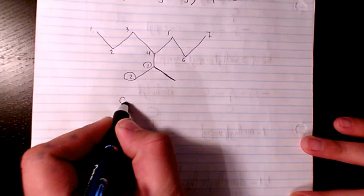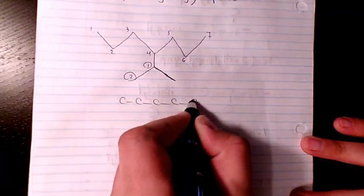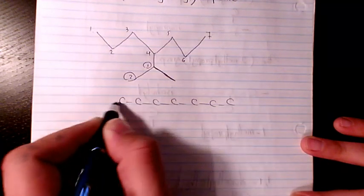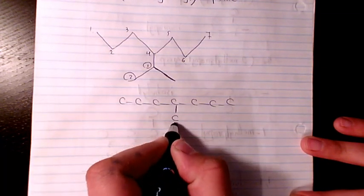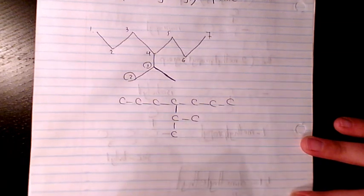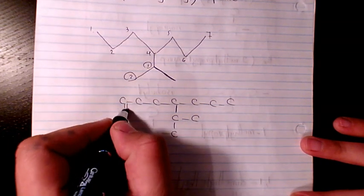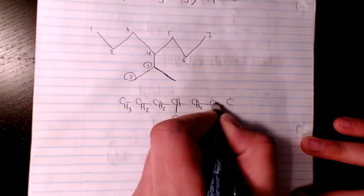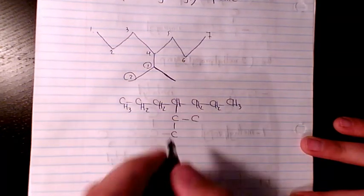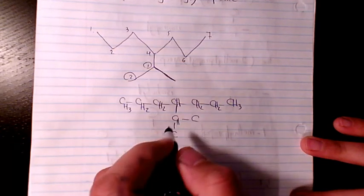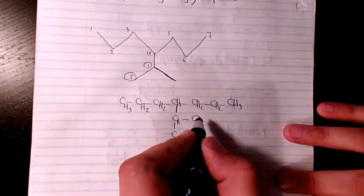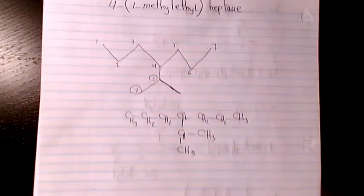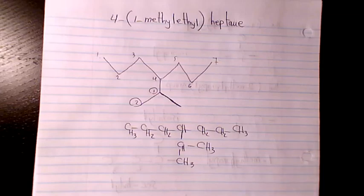Or if you want to draw it in the other format: one, two, three, four, five, six, seven. At the fourth position we have something like this. If you want to put the hydrogen atoms, you can have it like that: CH2, CH2, CH3. Here you have CH with CH3, CH3, CH3. That's how you draw this organic compound.